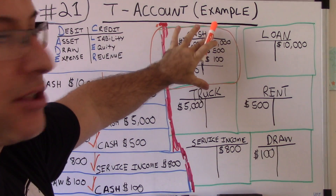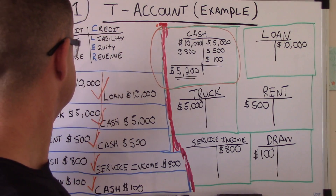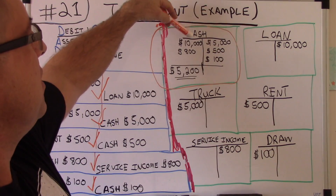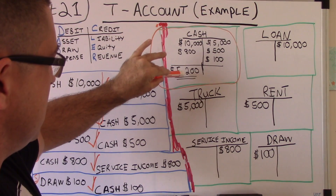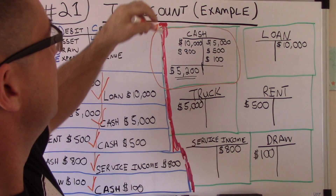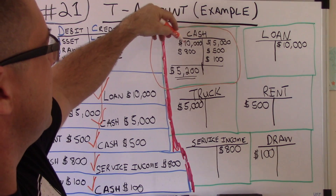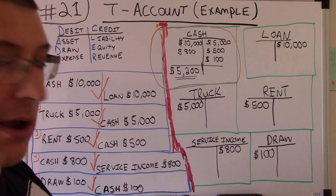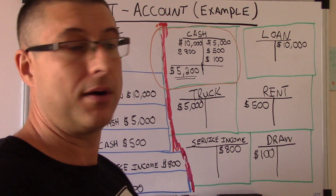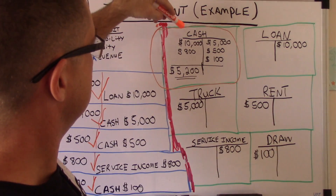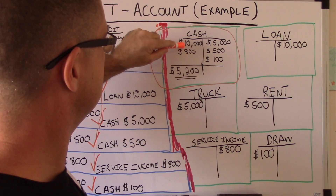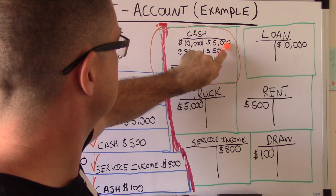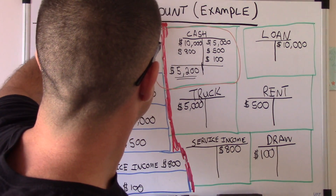For cash, we transferred each debit and credit from our journal entries into the cash account. There are a few ways to get to $5,200. You can add the debits — 10,000 plus 800 — and the credits — 5,000 plus 500 plus 100. Or you can work through it step by step: start with 10,000, minus 5,000 gives you 5,000.